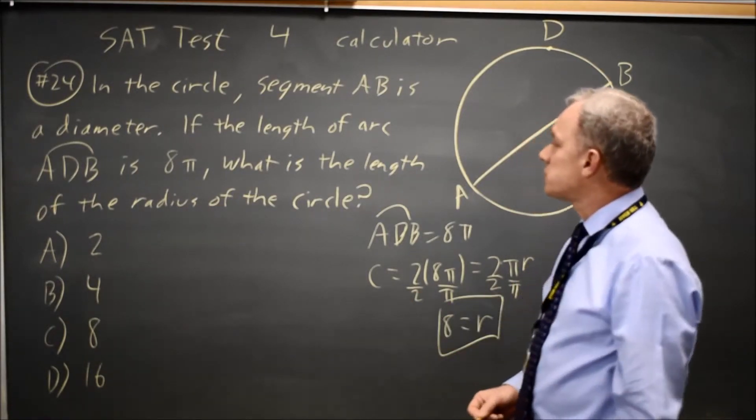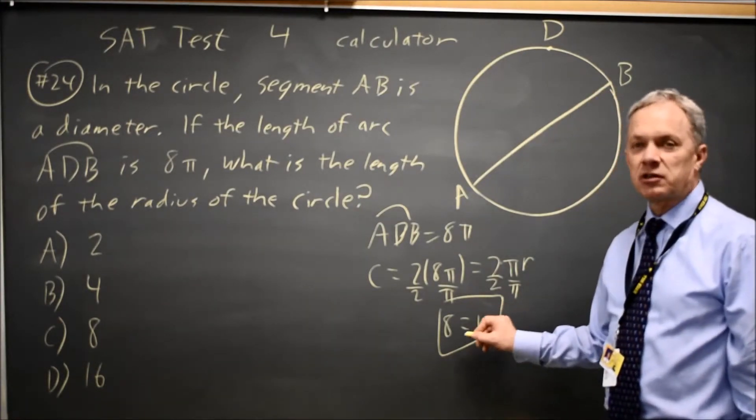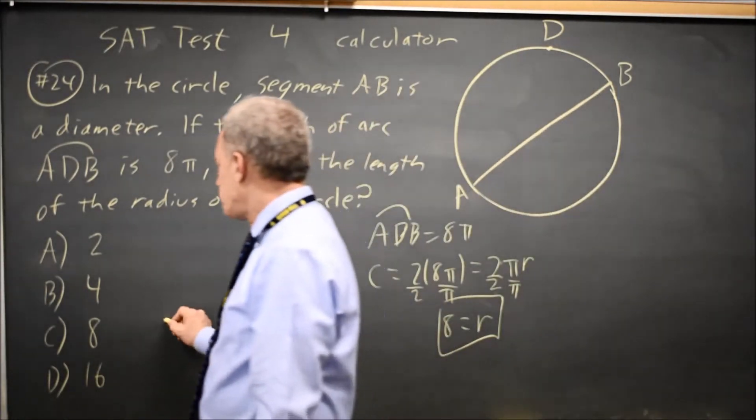And their question is, what is the length of the radius of the circle? And we just found that the radius is 8, so that would be choice C.